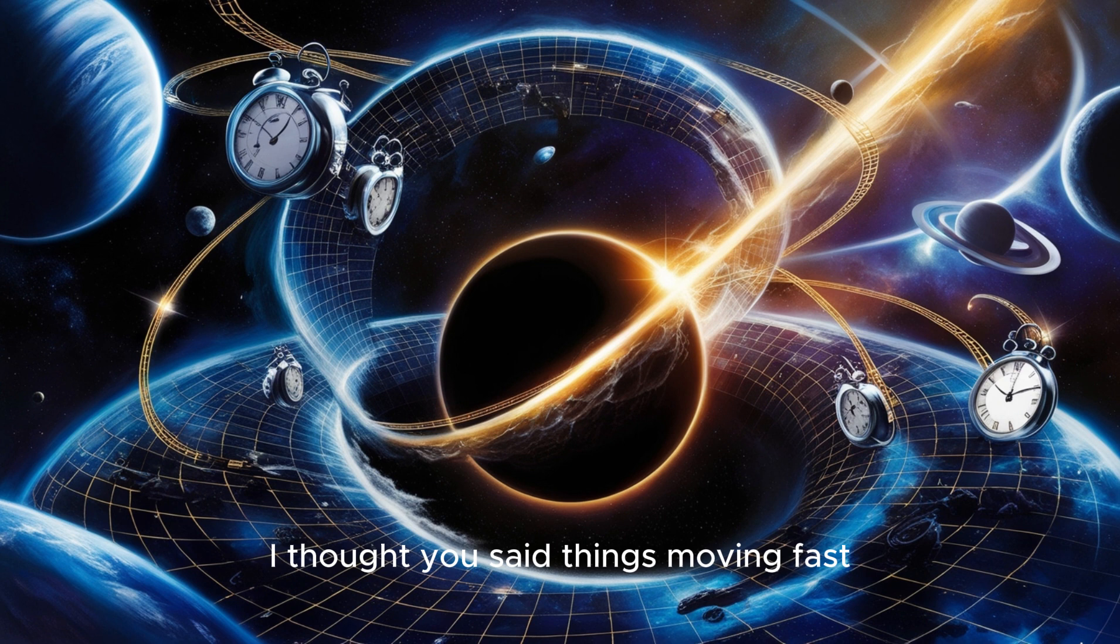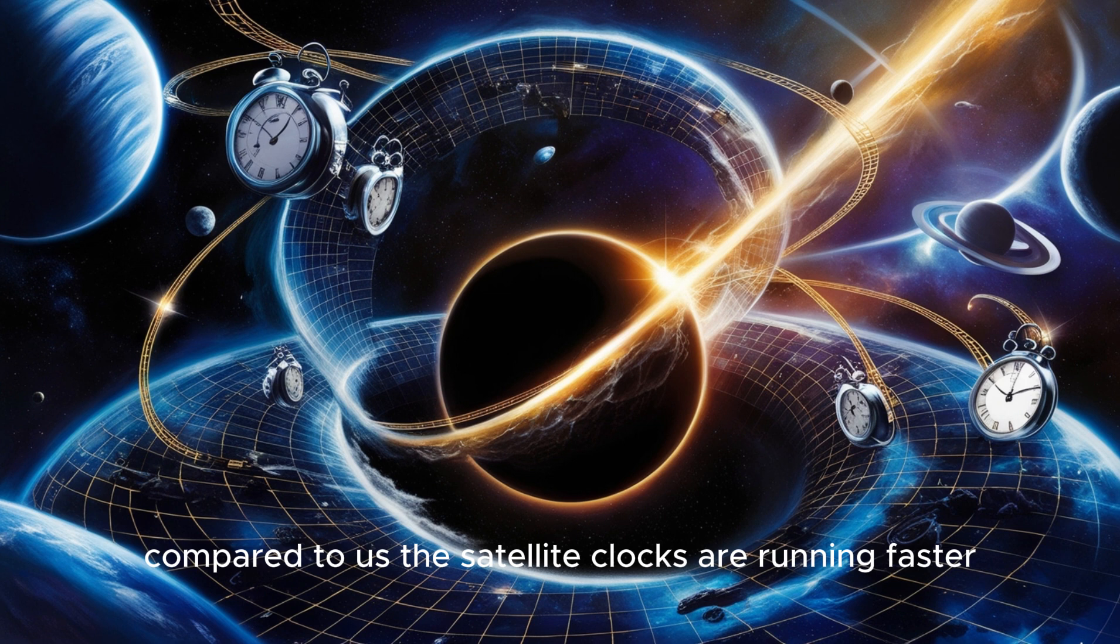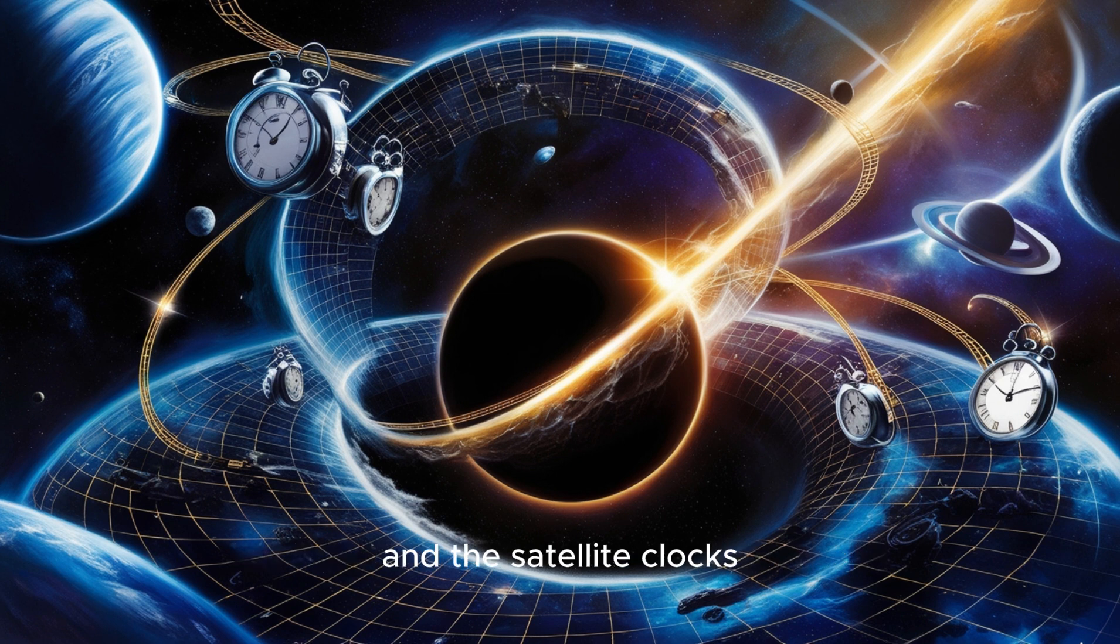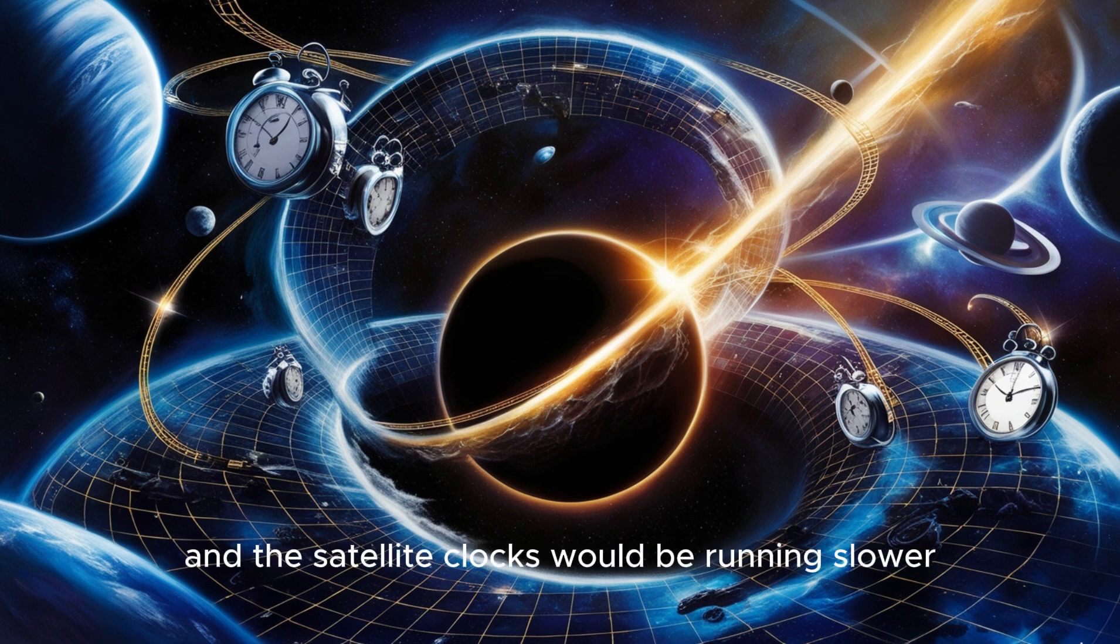Wait, faster? I thought you said things moving fast or in strong gravity have time slow down. You're right. It's all relative, remember? Compared to us, the satellite clocks are running faster because they're in weaker gravity. But if you compared both the Earth clocks and the satellite clocks to a clock just floating out in deep space, both the Earth and the satellite clocks would be running slower.